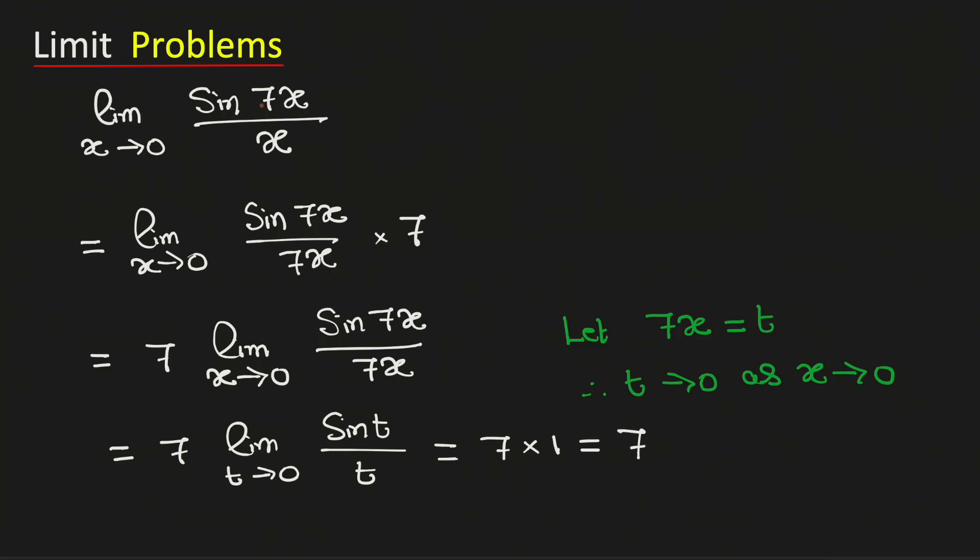Therefore the limit of sin(7x)/x when x tends to 0 is equal to 7. This is our final answer.